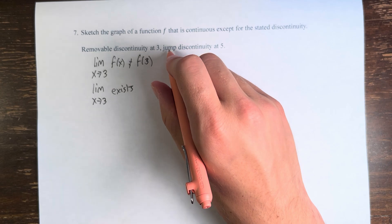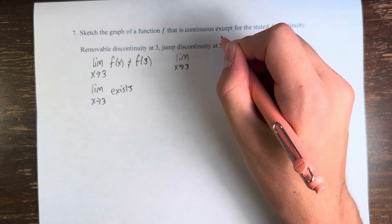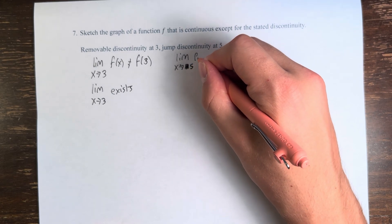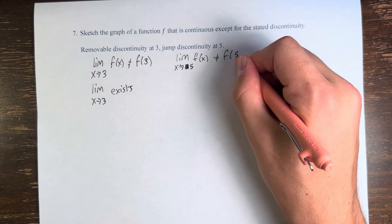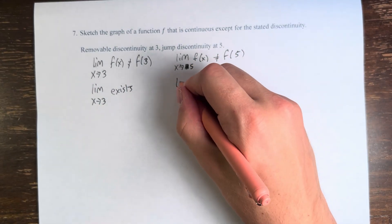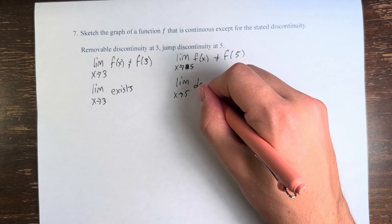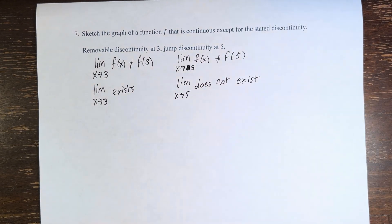However, at 5, we have a jump discontinuity, which means that the limit as x approaches 5 of f of x is not equal to f of 5, just like we had with 3. However, on top of that, the limit as x approaches 5 does not exist.